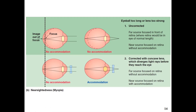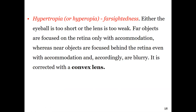With the appropriate correction in myopia, the far light source focuses on the retina without accommodation, and the near light source focuses on the retina after accommodation, changing the lens thickness — resulting in a clear image. The second refractive error affecting visual acuity is hypertropia, or hyperopia, or far-sightedness.